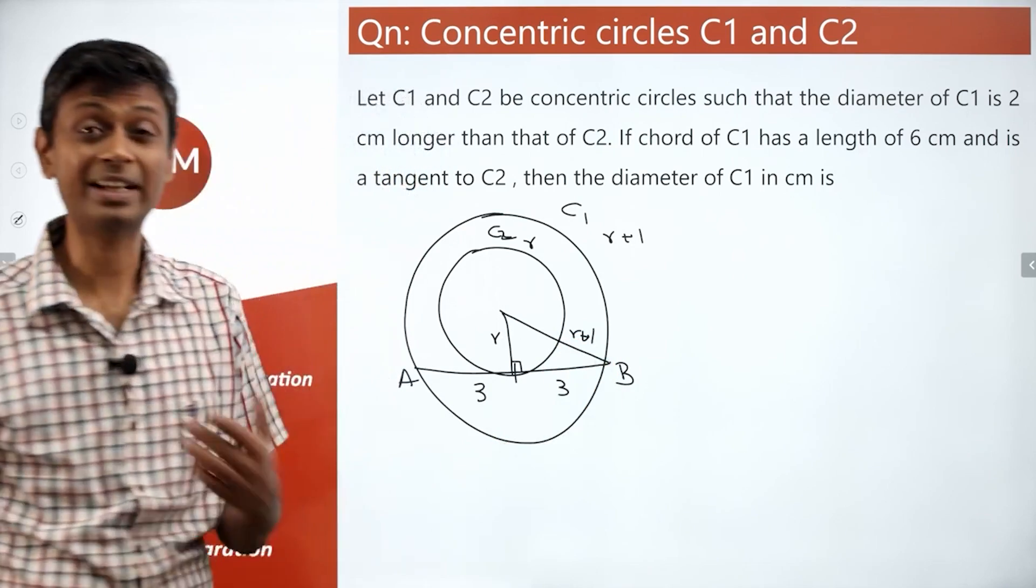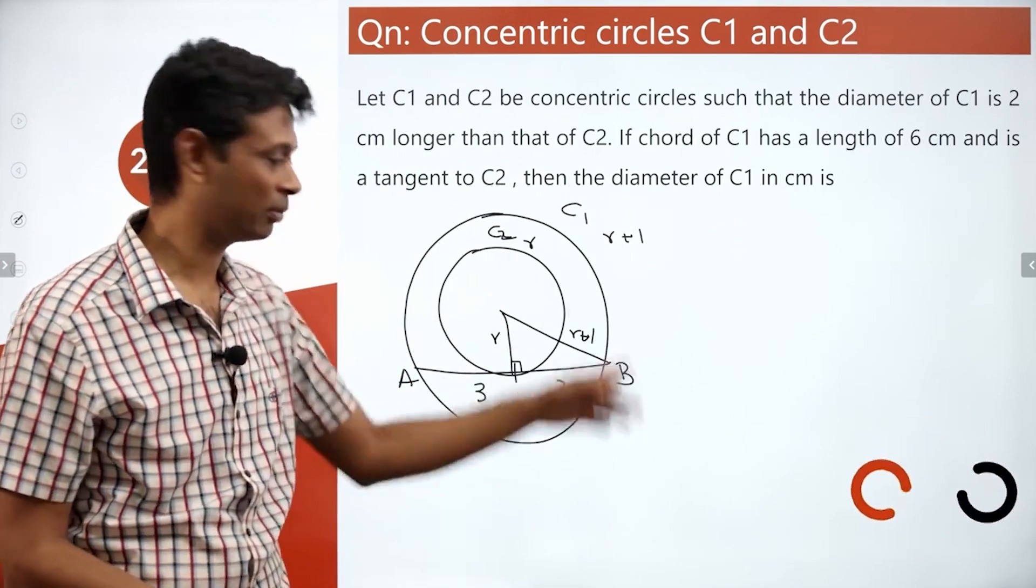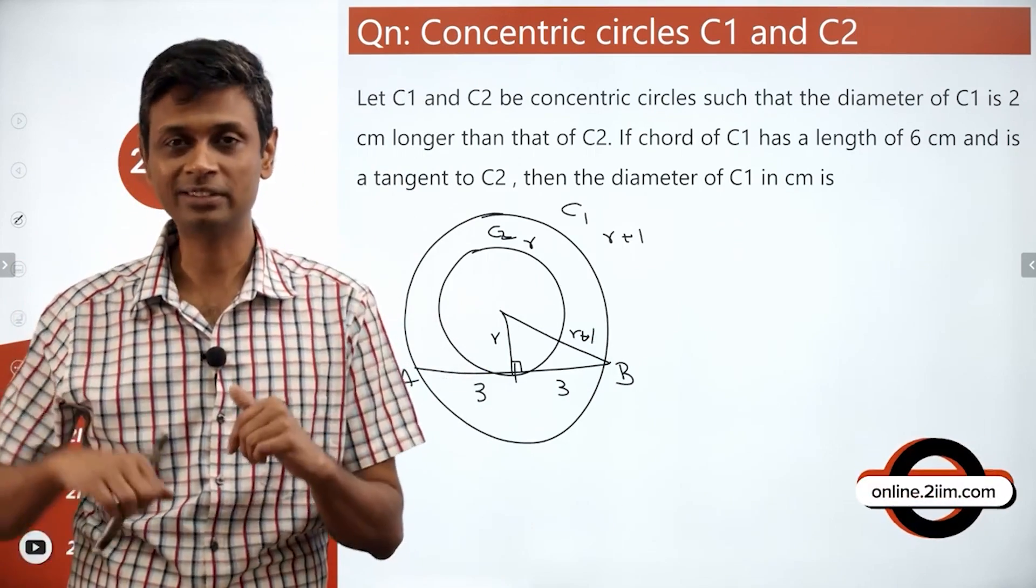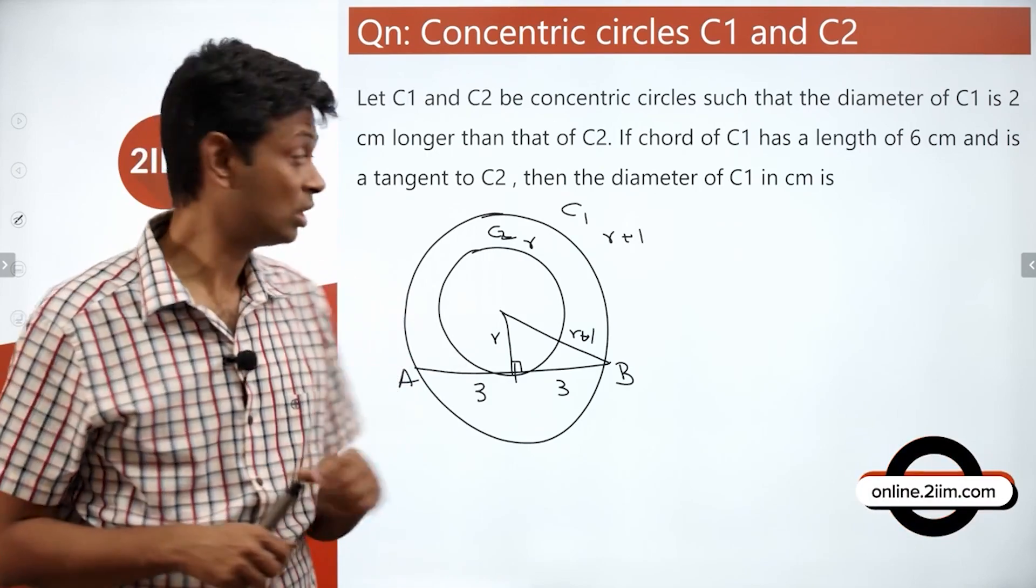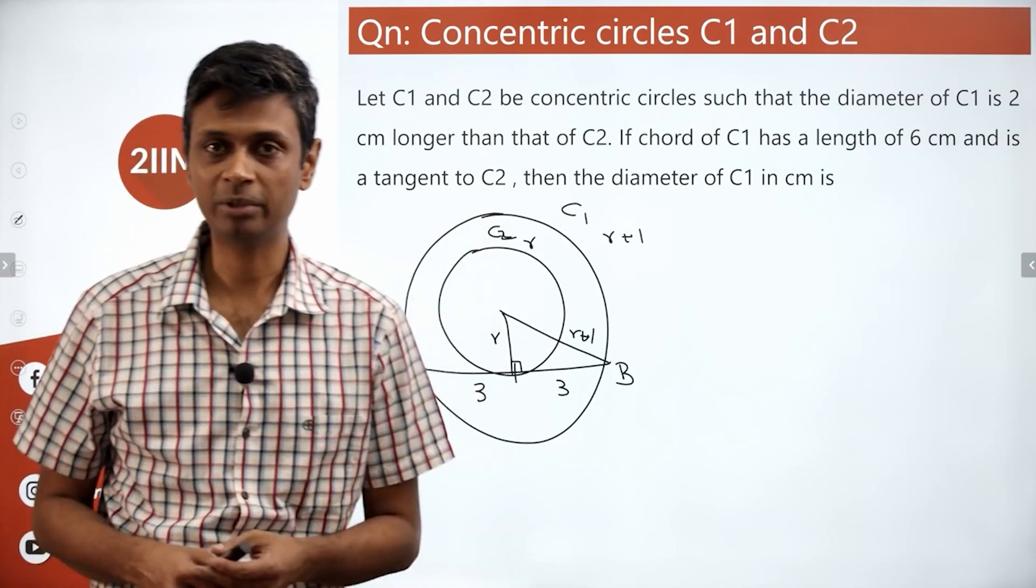Three sides of a right-angled triangle: 3, R, R plus 1. I already know this: 3, 4, 5. So the inner circle has radius 4 cm, outer circle has radius 5 cm. The diameter of C1 is 5 times 2, which is 10 cm.